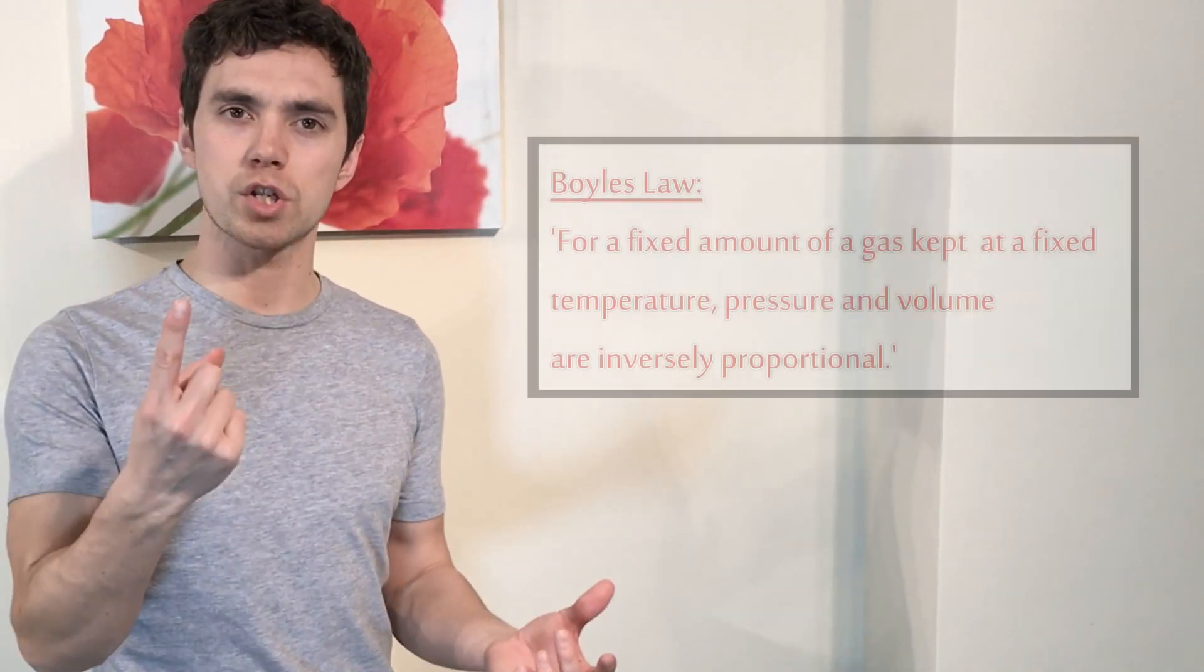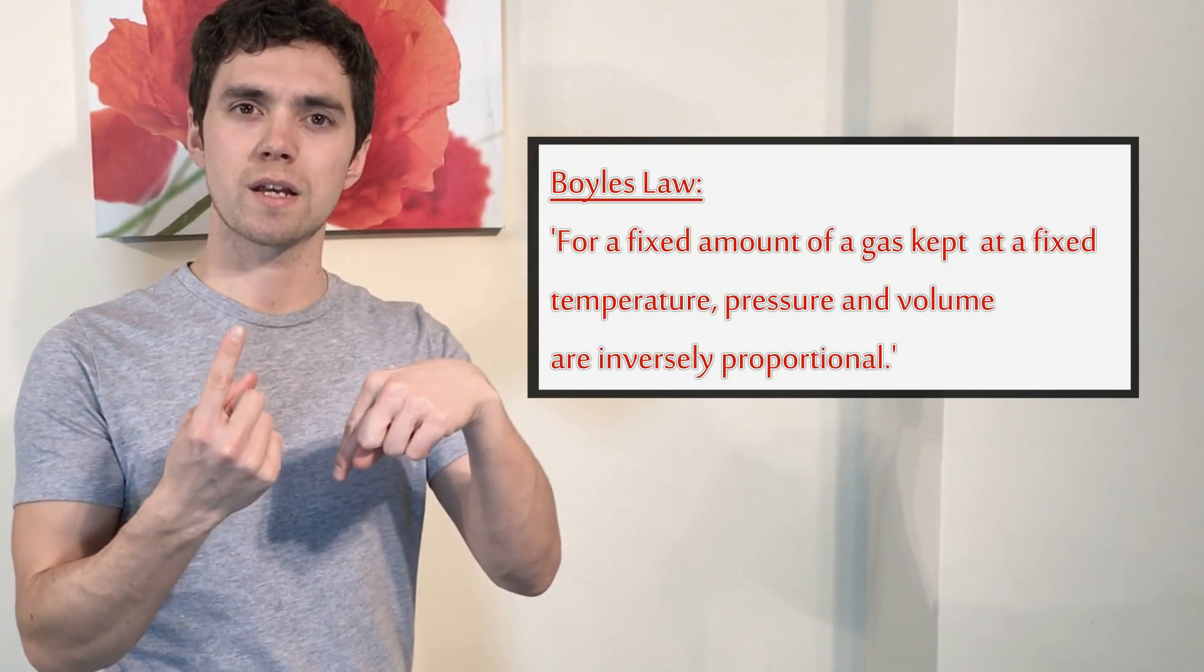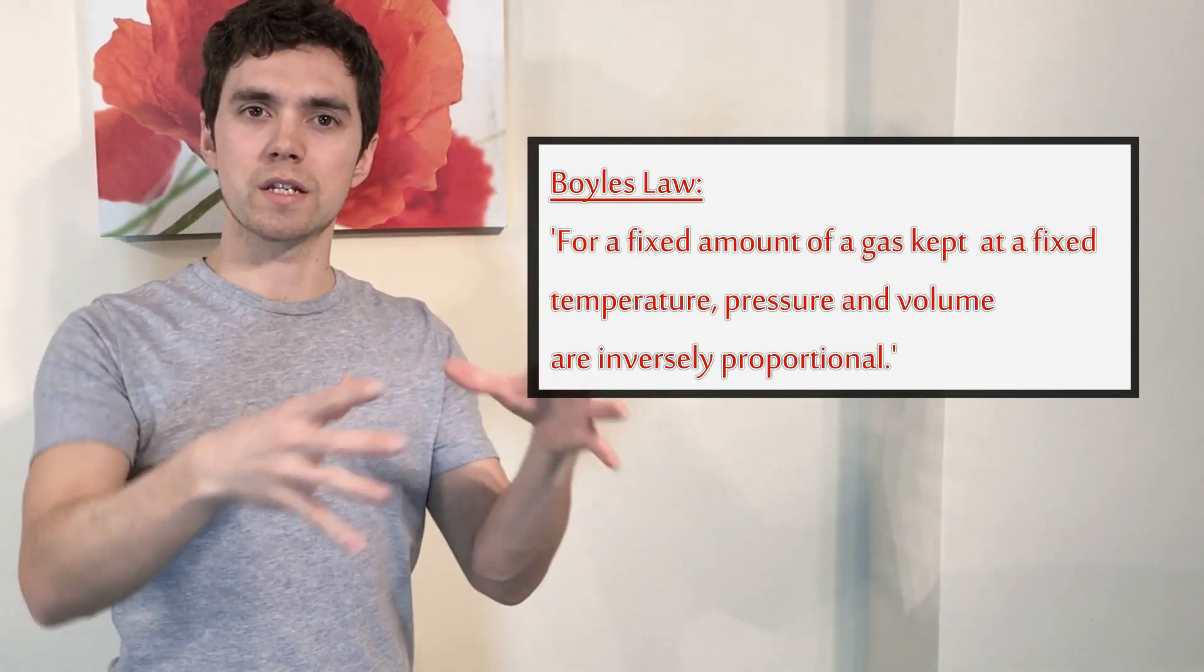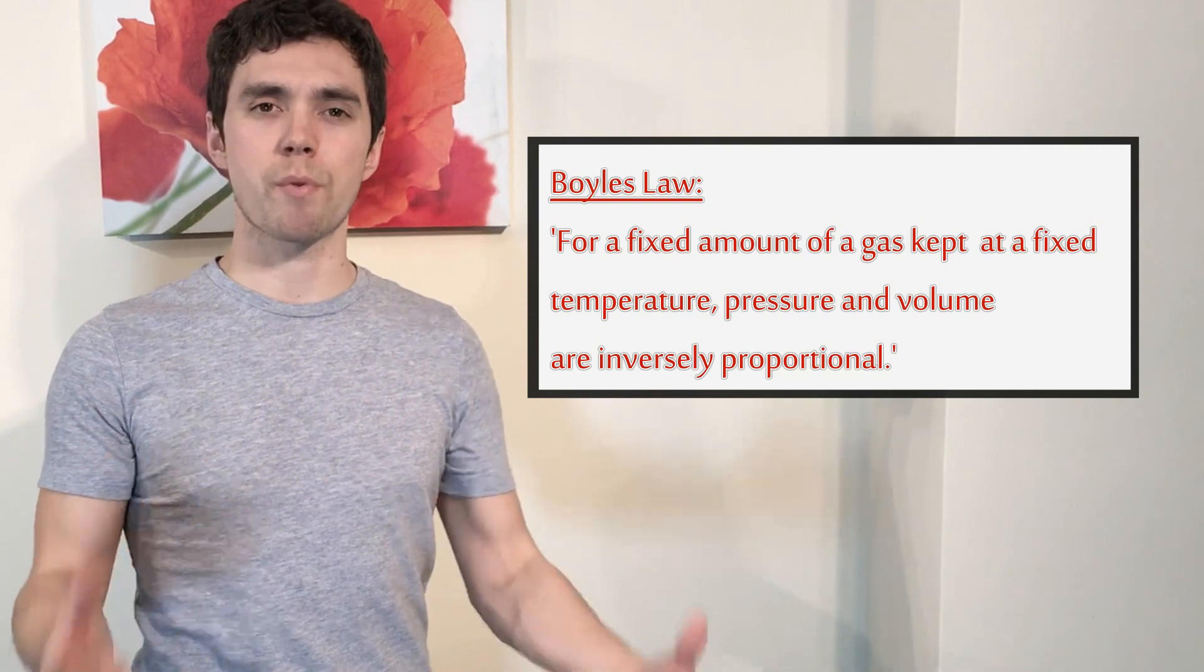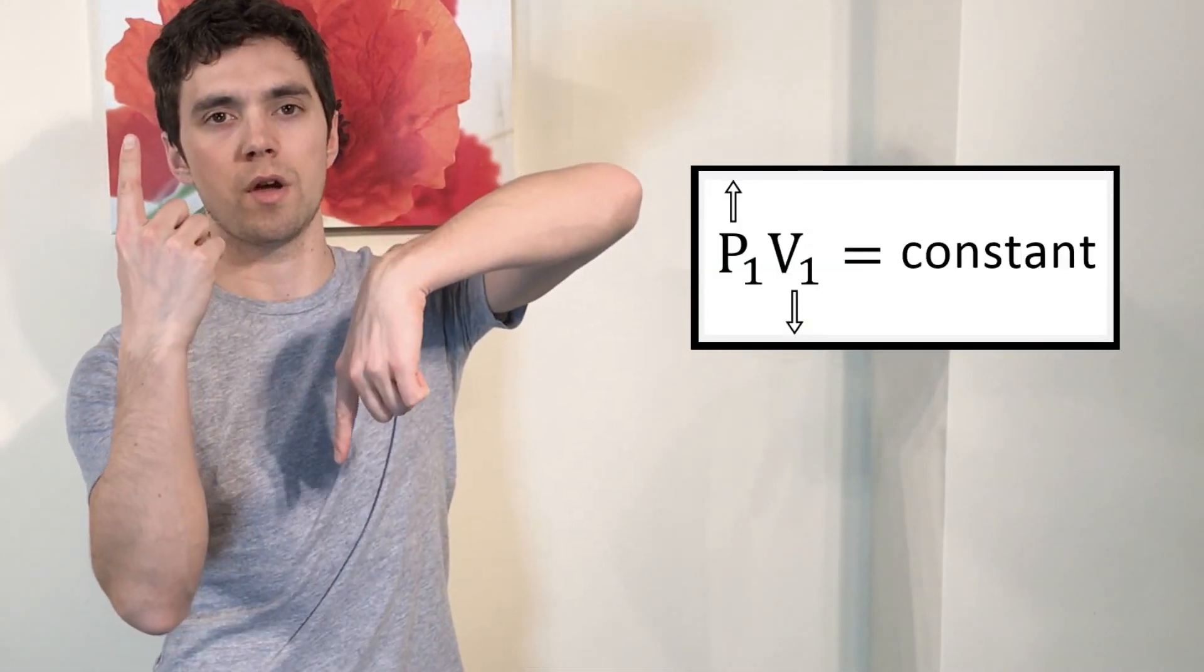Basically, Boyle's law is saying that pressure and volume for a fixed mass and a fixed temperature in a container is inversely proportional. Inversely proportional is a fancy way of saying one goes up, the other one goes down. The other one goes up, the other one goes down. I increase the volume, I get my sticky hands, I pull this balloon apart and the volume increases.